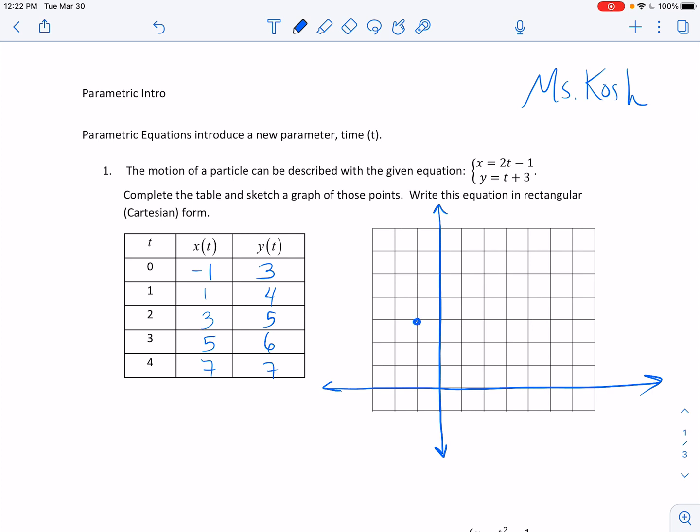I've got the point when x equals negative 1, y equals 3. Then I have the point 1, 4. I have the point 3, 5, then 5, 6, and 7, 7. And now often we'll draw these and put an arrow to kind of show which way it's going and where our starting point is. So this was when t was equal to 0, when time was 0, we were at that point, and then time was equal to 1. That shows you what's happening here.